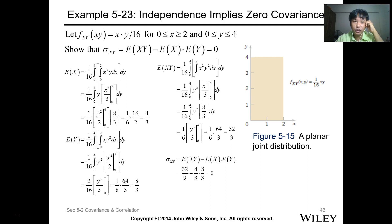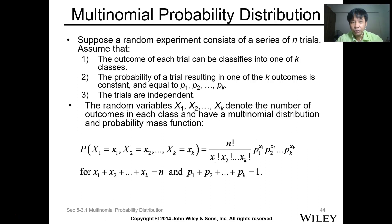So last time we finished independence for multiple variables. We will proceed with the multinomial probability distribution.